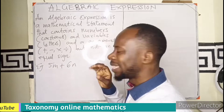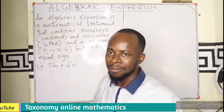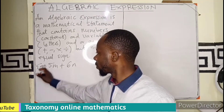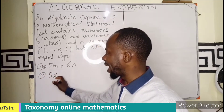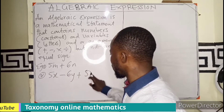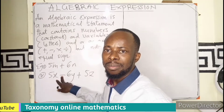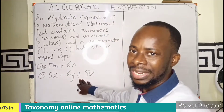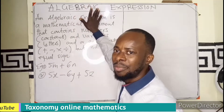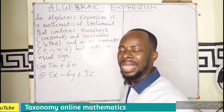Now, it doesn't mean that the statement should always contain the same kind of operators. For example, we can see that 5X minus 6Y plus 5Z uses both a minus and a plus operator. Both of these two statements are algebraic expressions because there is no equal sign.